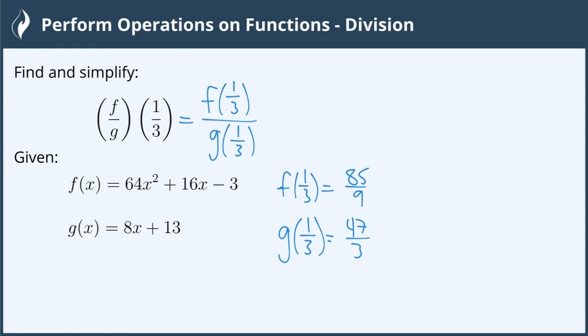So what we're going to do is substitute those into what we have up here. So we're going to do 85/9 divided by 47/3.